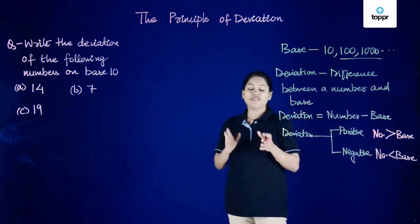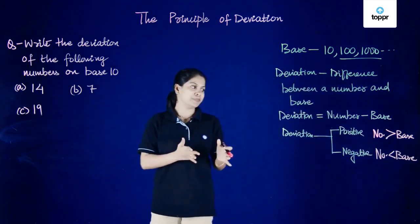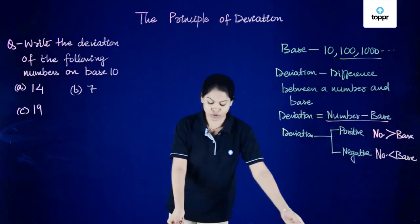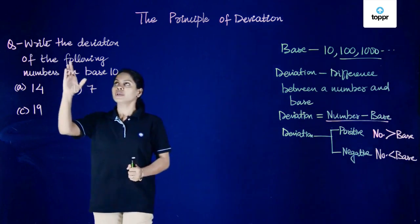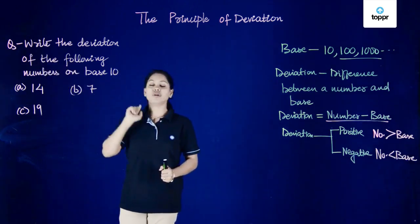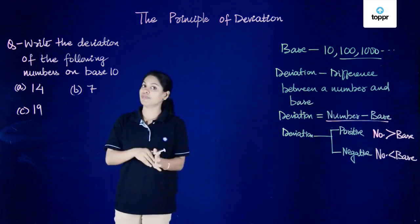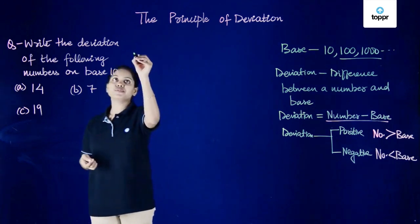Finding deviation is very simple. All we need to do is the number minus the base. So let's solve this question. We have to write the deviation of the following numbers on base 10. We have the numbers given and we also have the base given, so our work becomes much simpler.